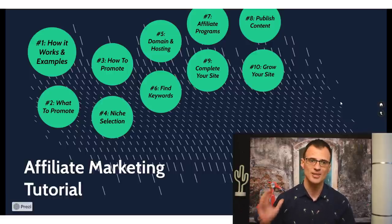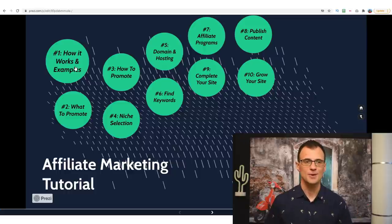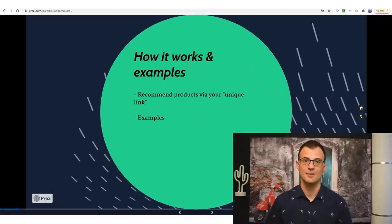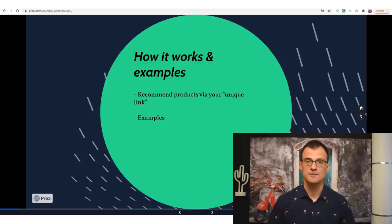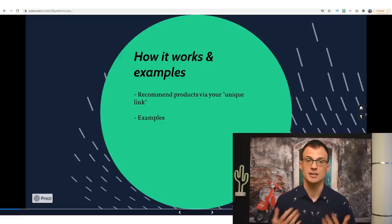So basically what you're going to see today is kind of like a full-blown course on affiliate marketing from the very start to the very end. Let's dive right in. First, let's look at how affiliate marketing works. Essentially, affiliate marketing is where you recommend products via your unique link, and whenever someone buys a product via that link you get paid a certain percentage in commissions.